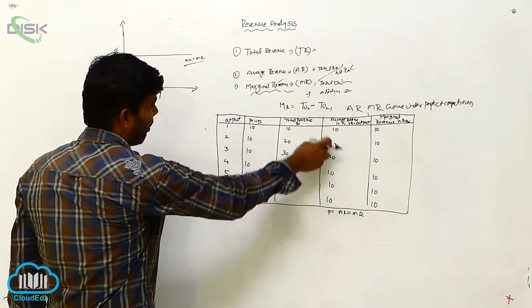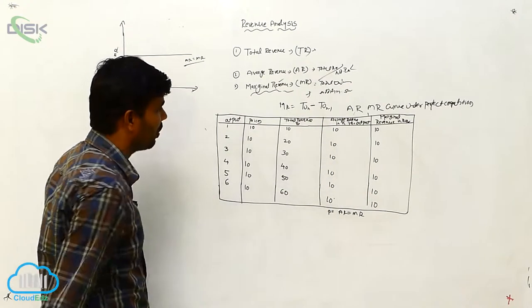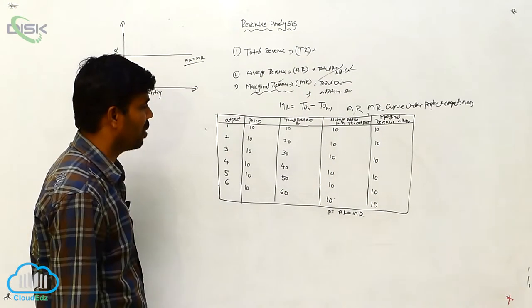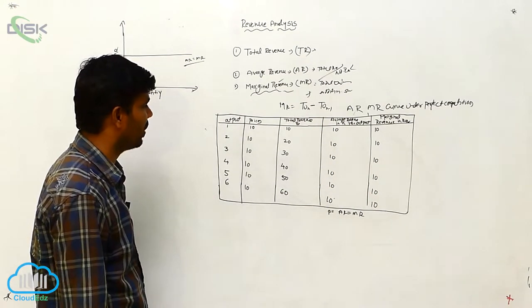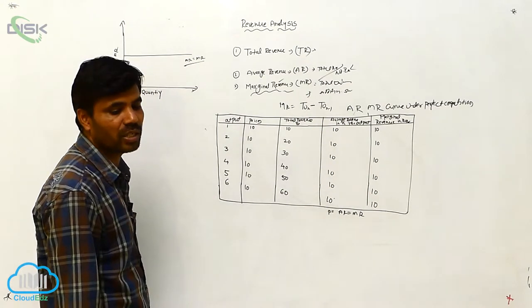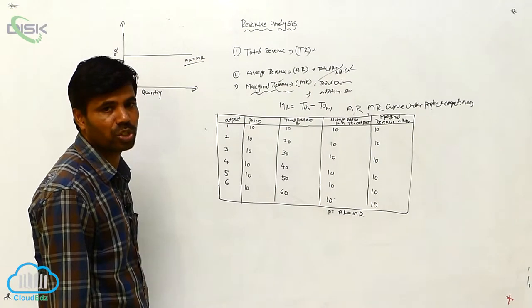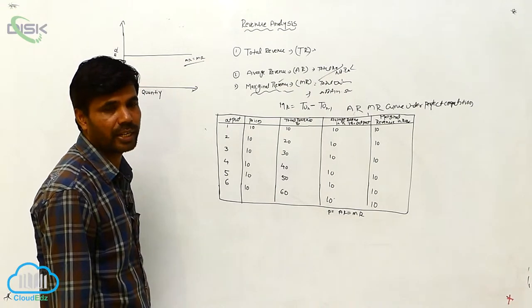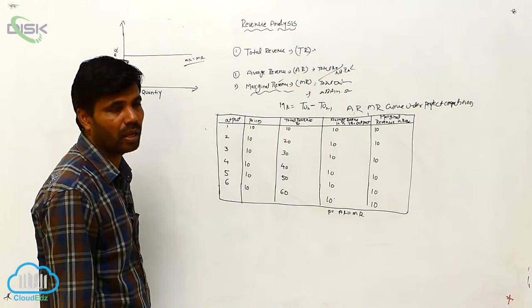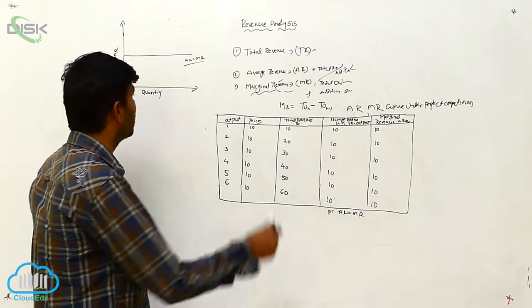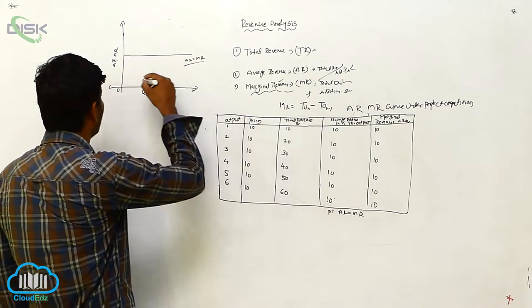Because here average rate is also fixed, marginal rate is also fixed, price is also fixed — there is no change at any time in any category.